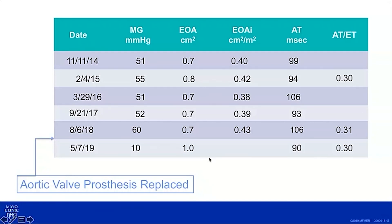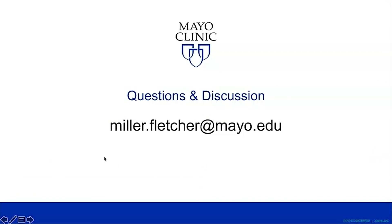When I saw her post-operatively and discussed it with her, she said it was the first time in five years that her gradient had been below 50. So she had prosthesis-patient mismatch throughout. When the surgeon removed the valve, he didn't describe any thrombus or pannus, and what he scraped away was consistent with sewing ring material. The pathologist, however, noted small pieces of tissue that could have been pannus. I suspect she did develop a very small rim of pannus at the end that accelerated the obstruction and made her symptomatic — a case of severe prosthesis-patient mismatch severe enough to necessitate re-operation.